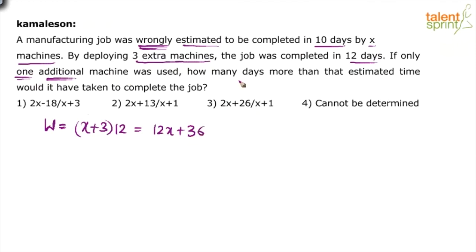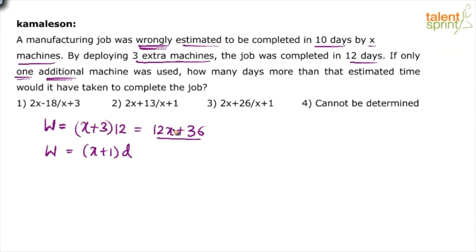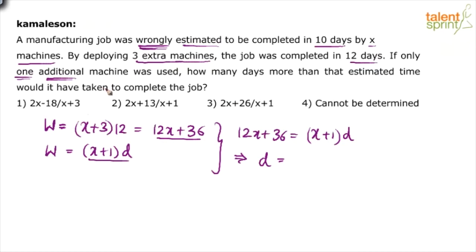Now, if only one additional machine is used, how many days more than the estimated time would it take? When only one additional machine is used, the total work W equals X plus 1 multiplied by D, where D is the unknown number of days. Since 12X plus 36 and (X+1)×D both represent the same total work, we can say 12X plus 36 equals X plus 1 into D. Therefore, D equals 12X plus 36 divided by X plus 1.